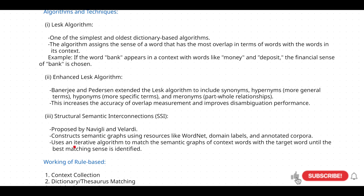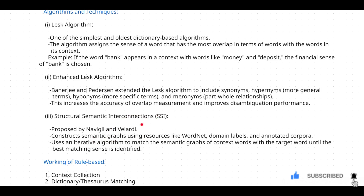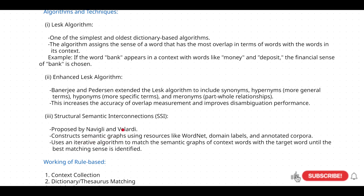You construct one semantic graph, then check if that particular context is matching. If it is not matching, you build another semantic graph. You keep building semantic graphs until the context matches.